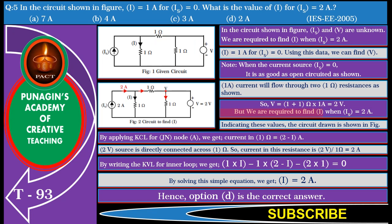But we are required to find I when Is equals 2 amperes. Indicating these values, the circuit drawn is shown in the figure. By applying KCL for junction node A, we get the current in the 1 ohm resistor equals (2 minus I) amperes. Also note that the 2 volt source is directly connected across the 1 ohm, so the current in this resistance is 2 volts divided by 1 ohm, equal to 2 amperes.